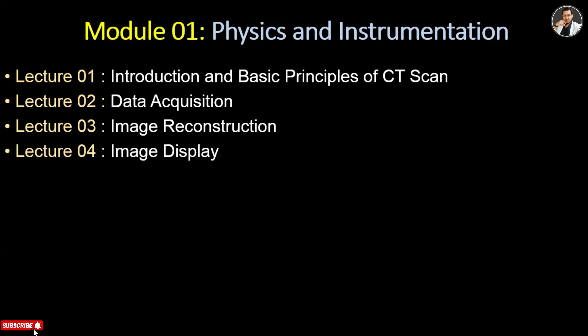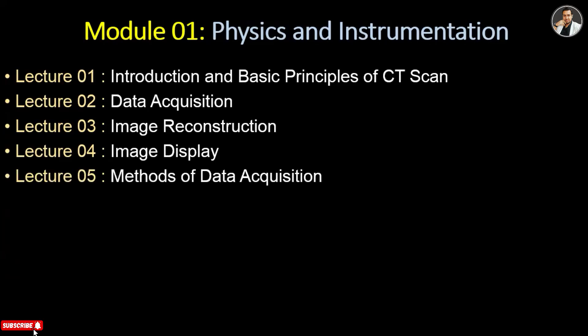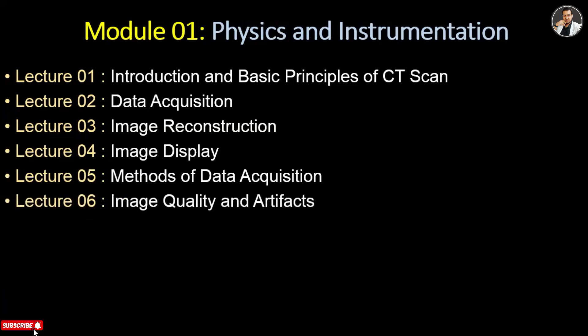Lecture 4 is about image display — what things are required to display an image and how it works. Lecture 5 is about methods of data acquisition, covering the several methods used. Lecture 6 is about image quality and artifacts, a very important tutorial where we will see reference techniques to reduce image artifacts and increase image quality.